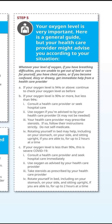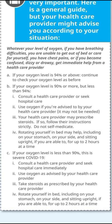Step five: your oxygen level is very important. Here is some general guidance, but your healthcare provider might advise you according to your situation. Whatever your oxygen level, if you have breathing difficulties, are unable to get out of bed or care for yourself, have chest pain, or become confused, dizzy, or drowsy, get immediate help from a healthcare provider. If your oxygen level is 94% or above, continue to check your oxygen level as before. If your oxygen level is 90% or more but less than 94%, consult a healthcare provider to seek hospital care. Use oxygen if advised by your healthcare provider, and your healthcare provider may prescribe steroids — if so, follow their instructions strictly. Do not self-medicate. Rotating yourself in bed may help, including lying on your stomach, on your side, and sitting upright, for up to two hours at a time.